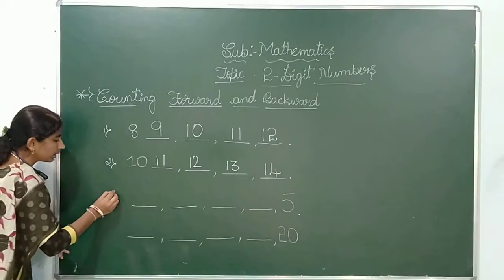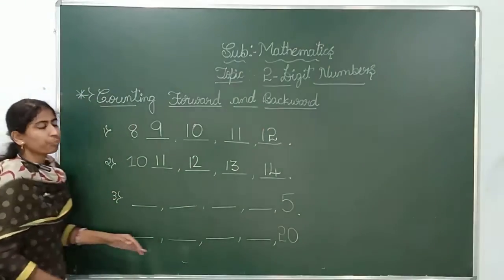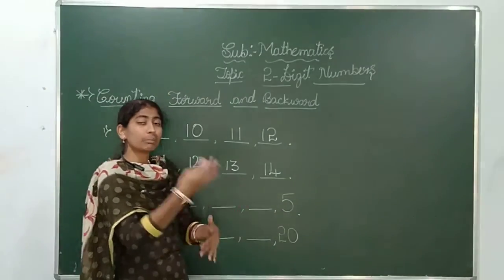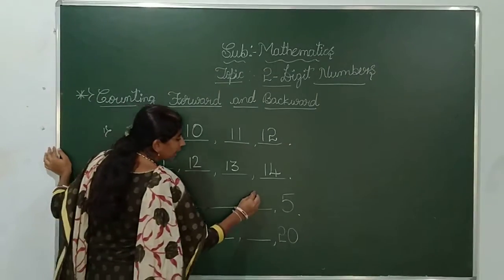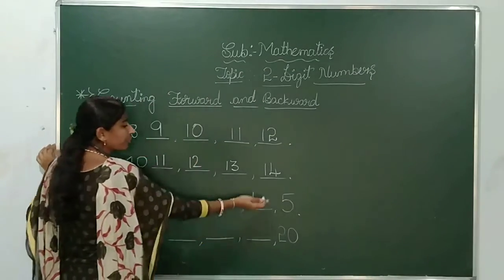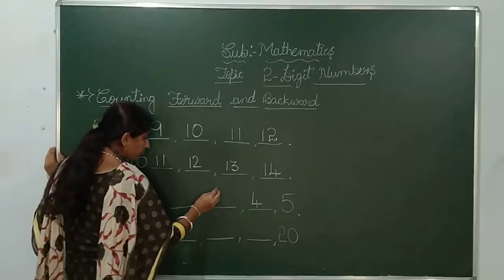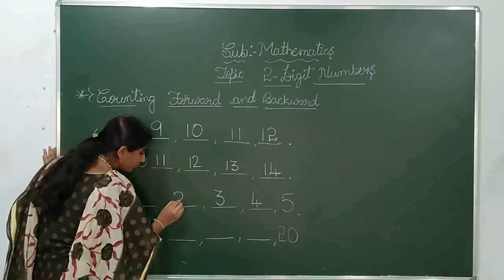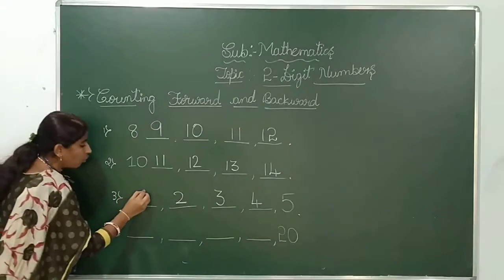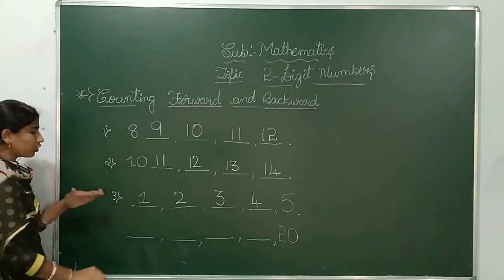Now let us go to the third example. It is backward. Means we have to count the numbers back side. What is the before number of 5? It is 4. Then before number of 4 is 3. Then 3's before is 2. Then 2's before is 1.